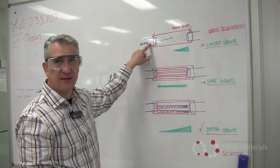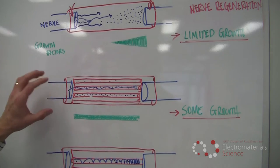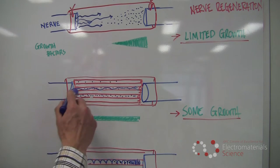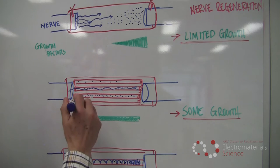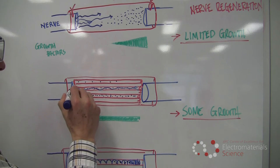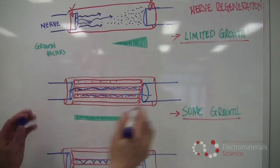An alternative to that is to have multiple channels, micro channels, along the length of the gap that then contain growth factors here in blue, and then guide the neurons from one side to the next, reconnecting both ends.